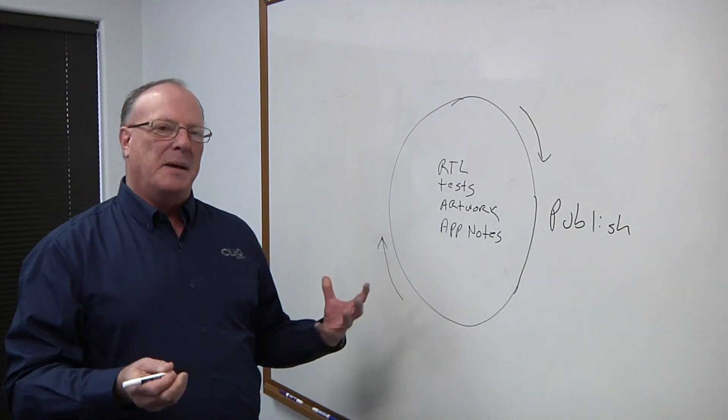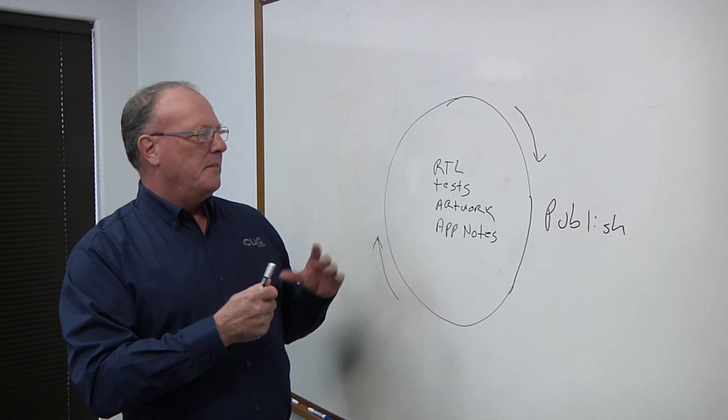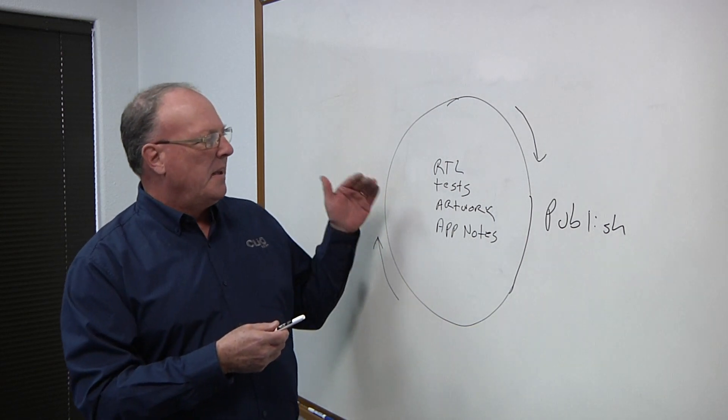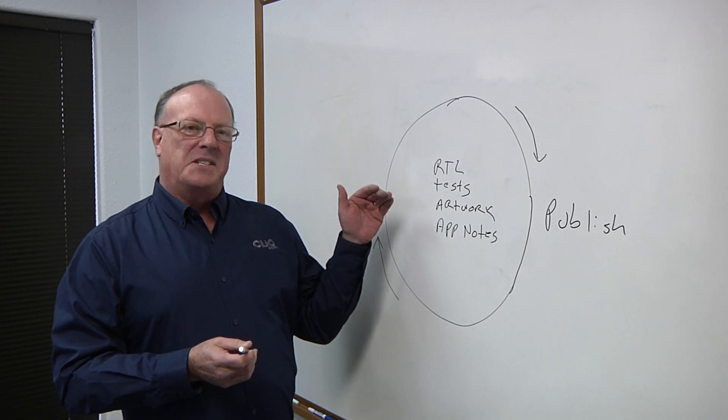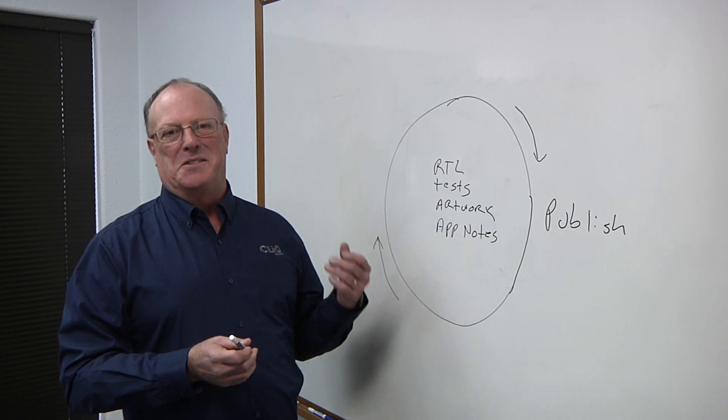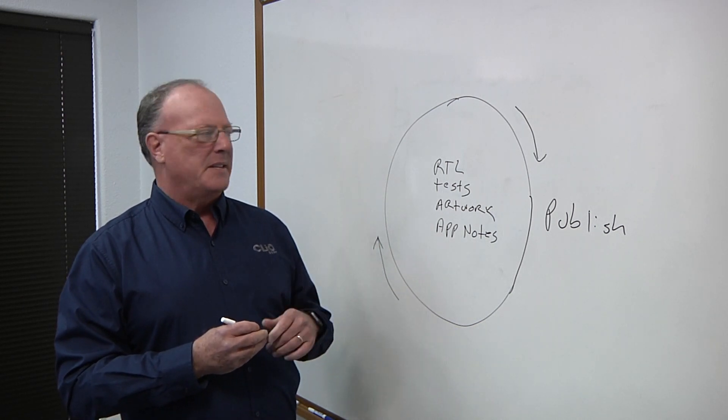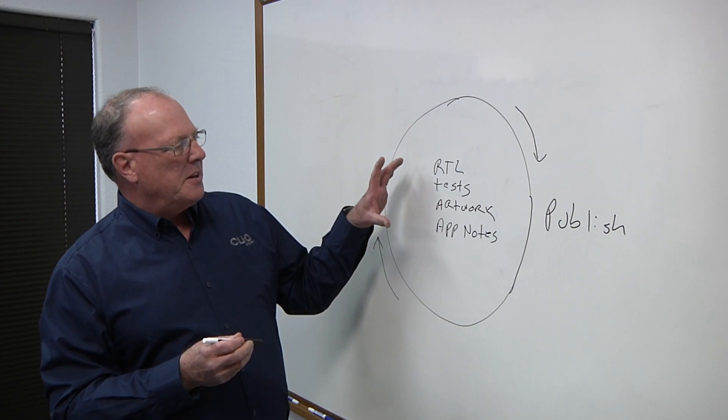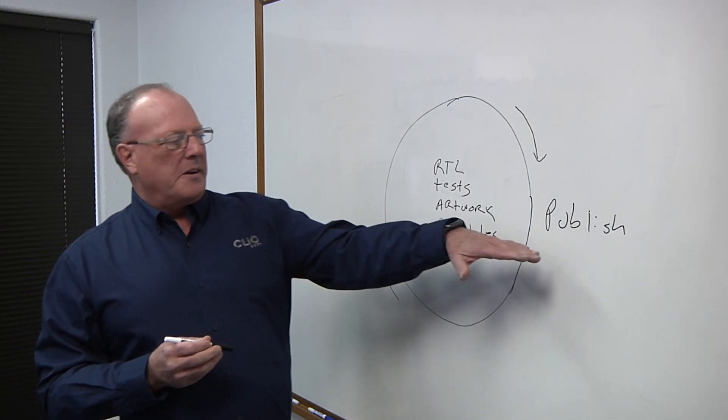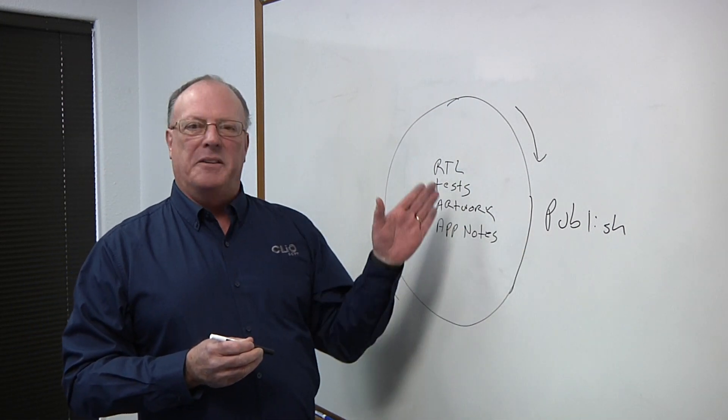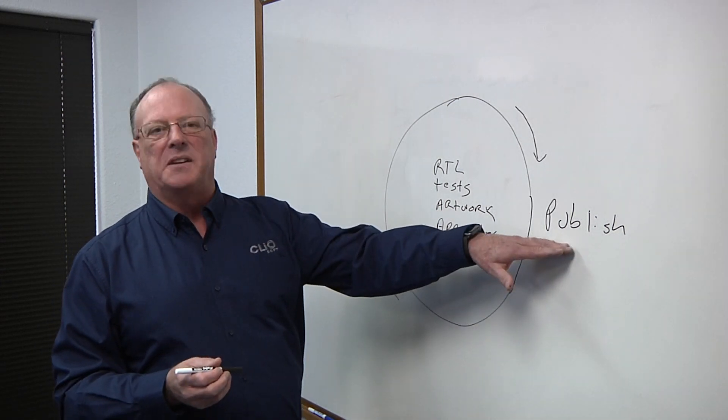So when you publish, depending on the type of IP that you have, you have various assets that you need to bring into some system somewhere that people can find and access. If it's something like a digital IP, you might have RTL, you need to have more than the RTL assets. You oftentimes have to have test benches, you need to have app notes, you may need to have timing libraries, etc. And the first thing that you try to do is, what do you need to publish to make the IP useful out of the gate?